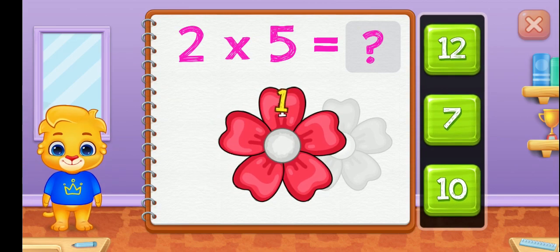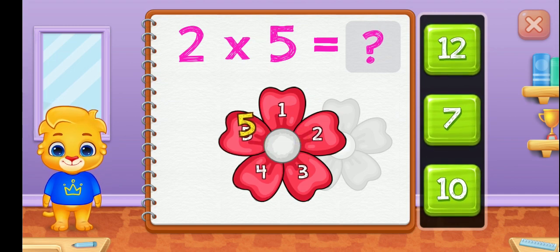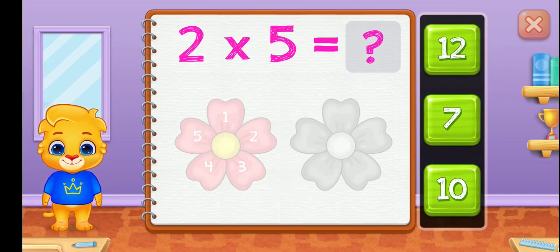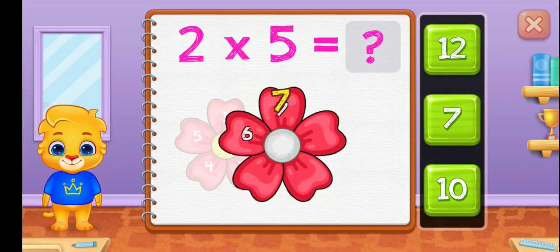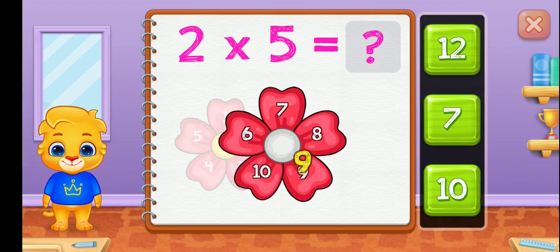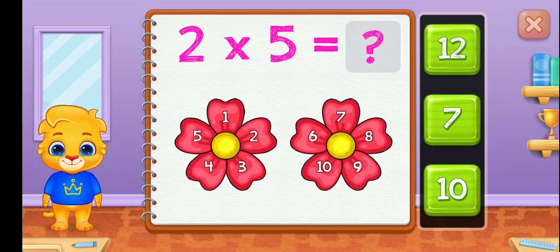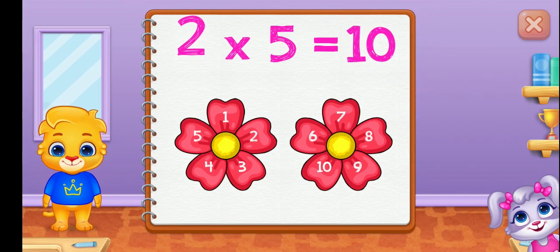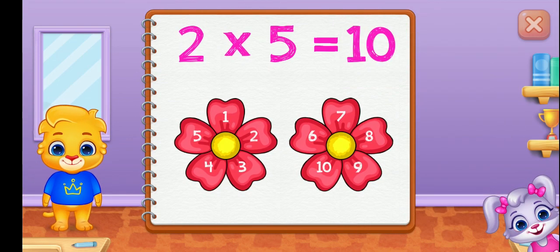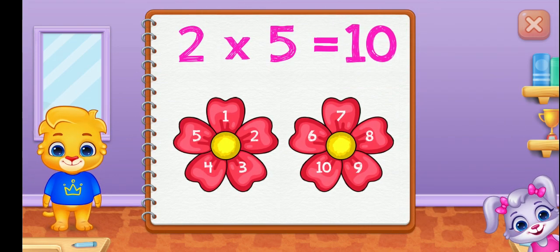One, two, three, four, five. Six, seven, eight, nine, ten. Two groups of five equals ten.